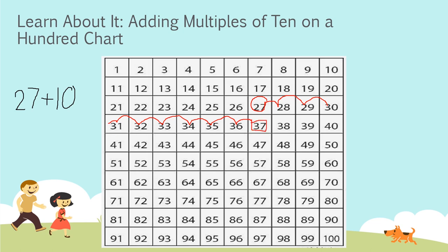What do you notice about the sum of 37? Yes, it's directly below the 27 on the one hundreds chart. That's because there are 10 boxes in every row on a hundred chart. So every time we add 10 on a hundreds chart, our sum will be directly below the number. So adding 10, we'll put our sum directly below our number.